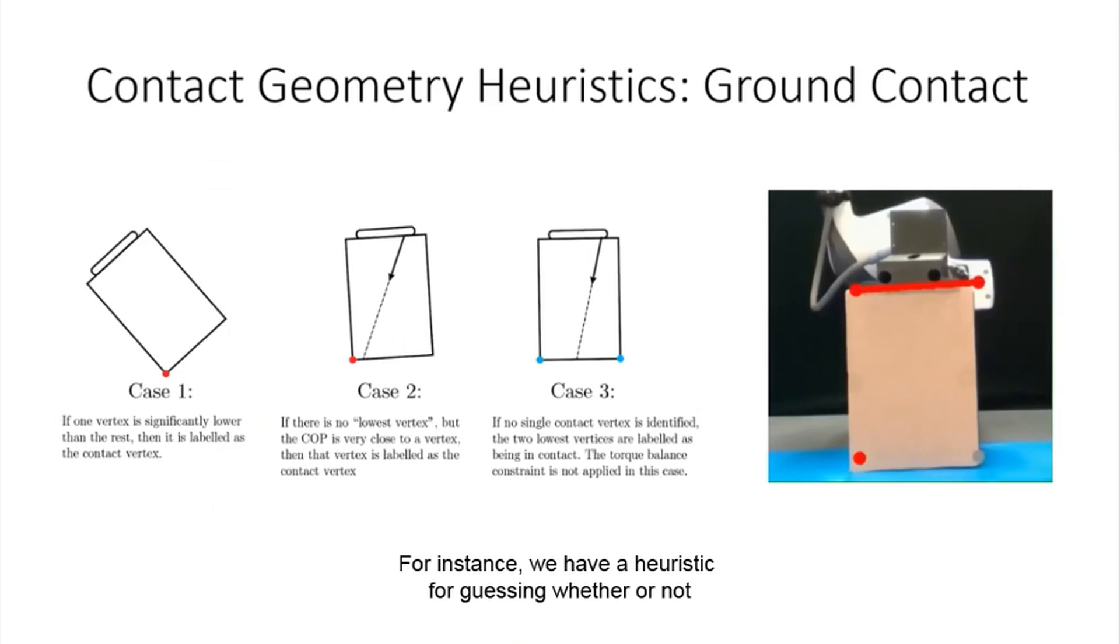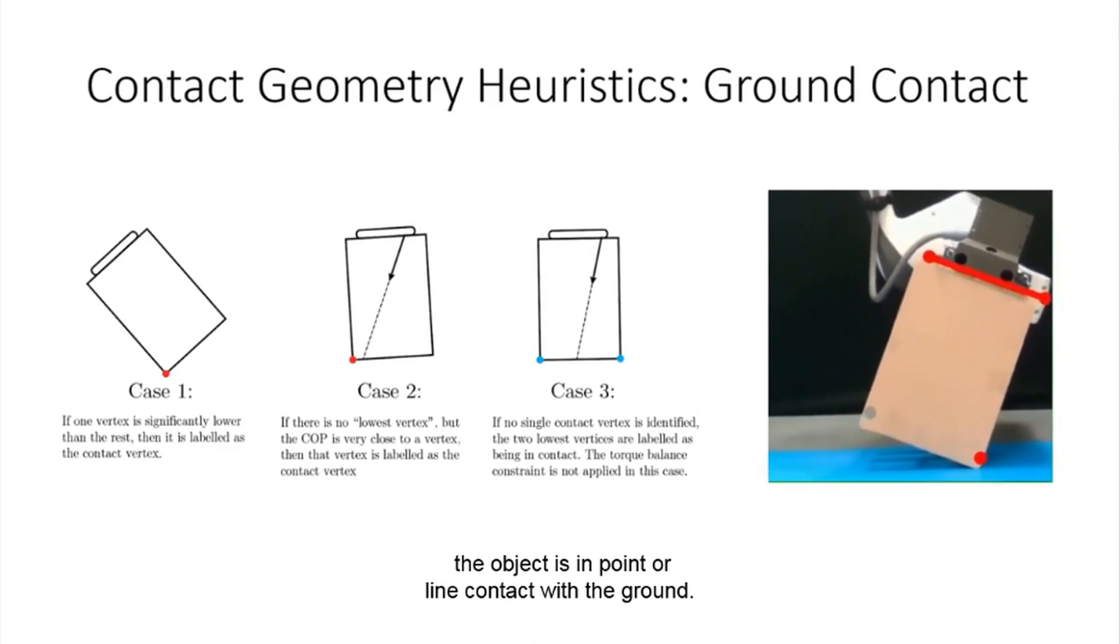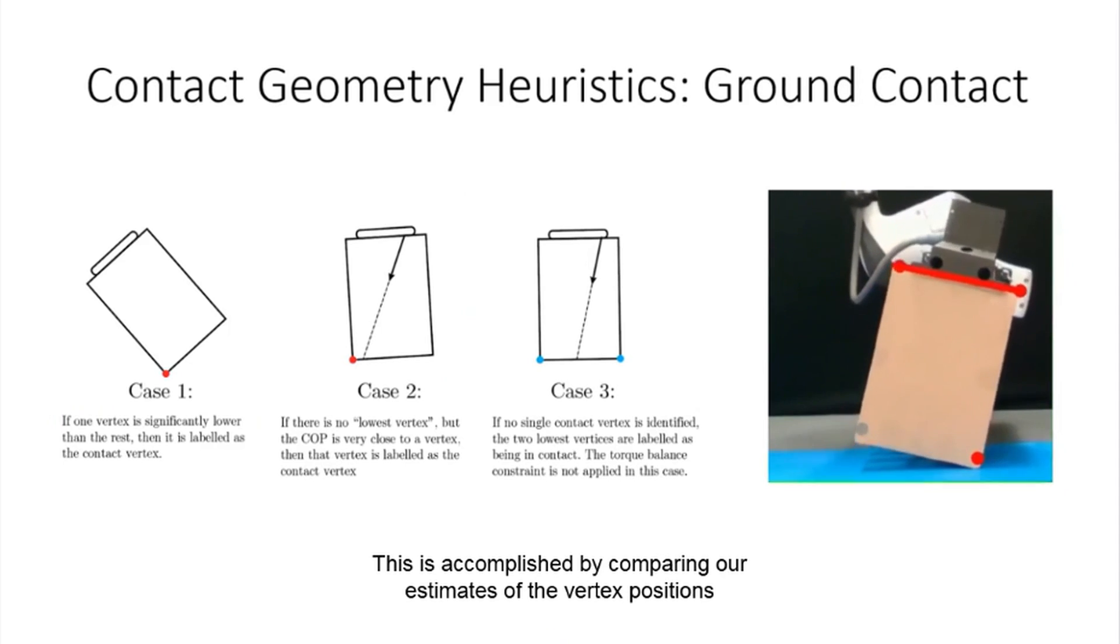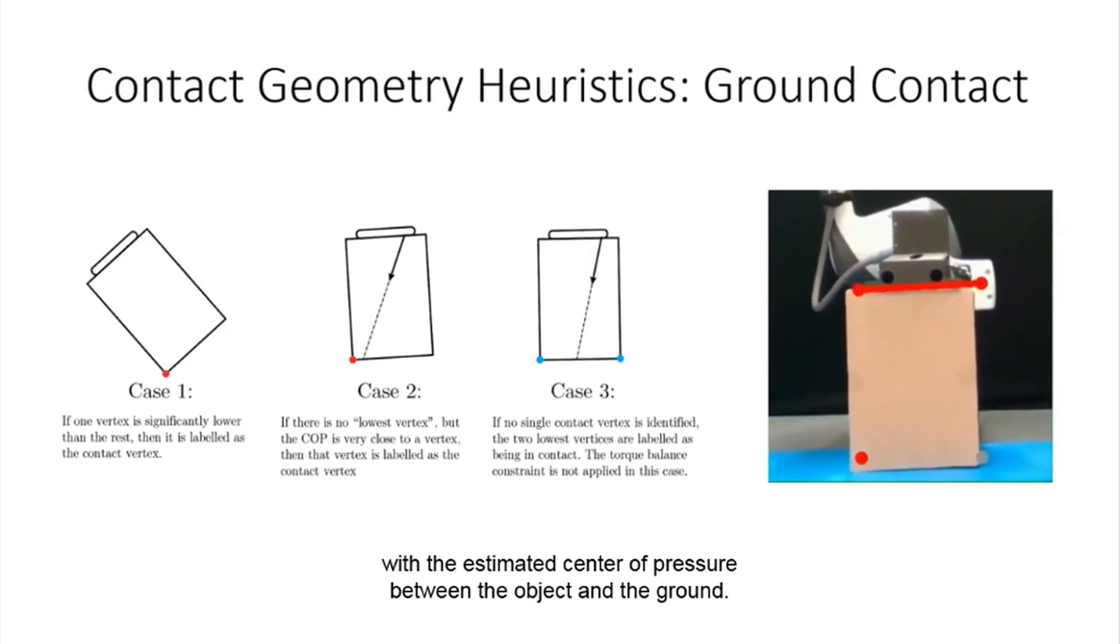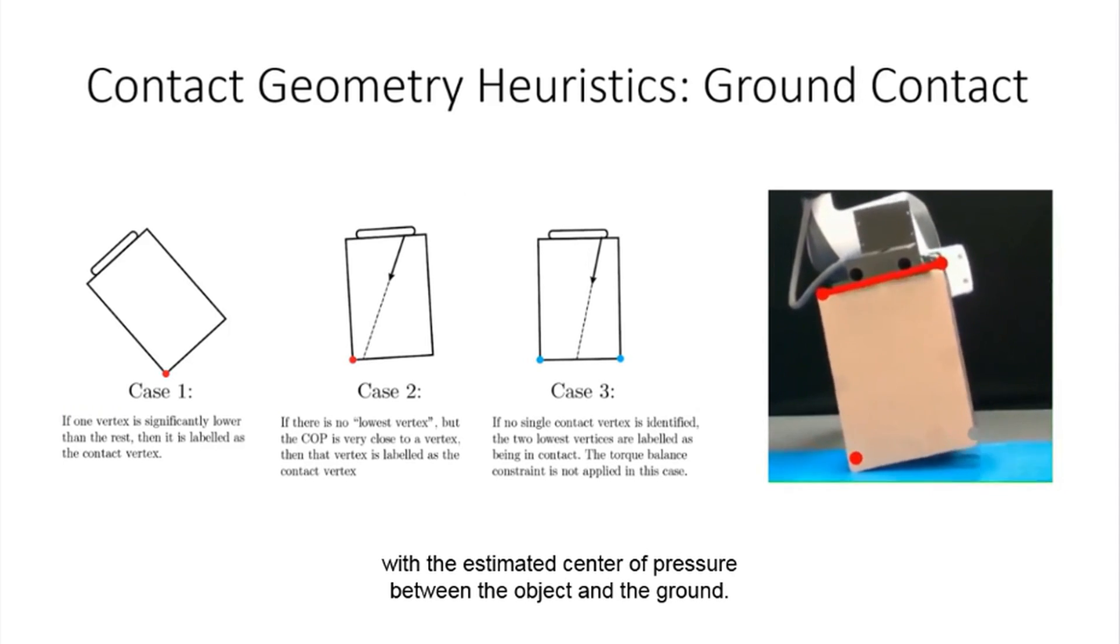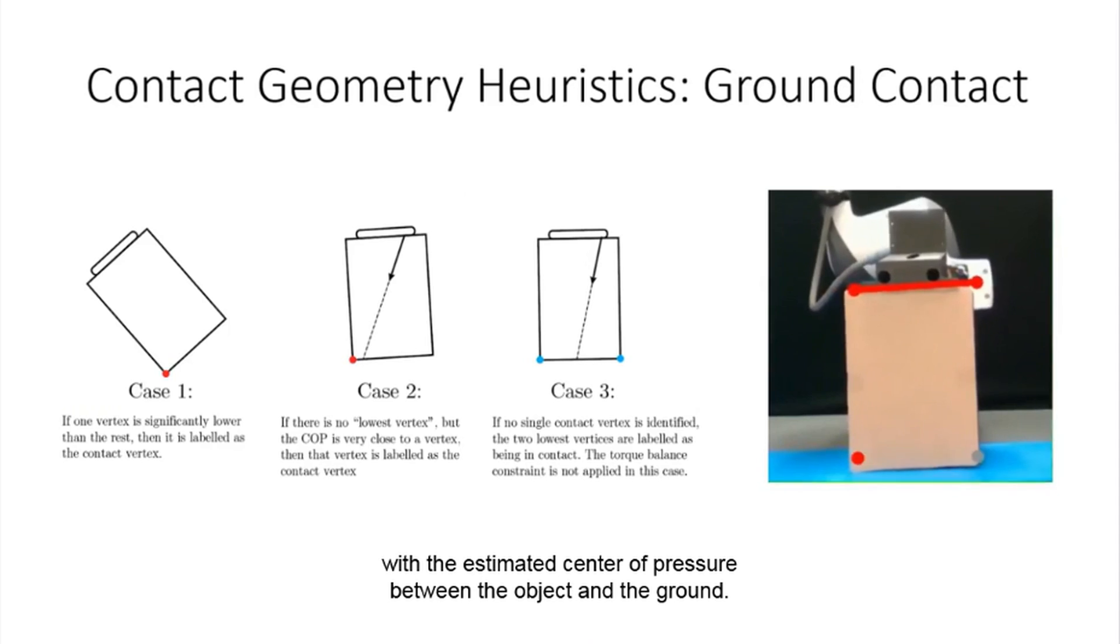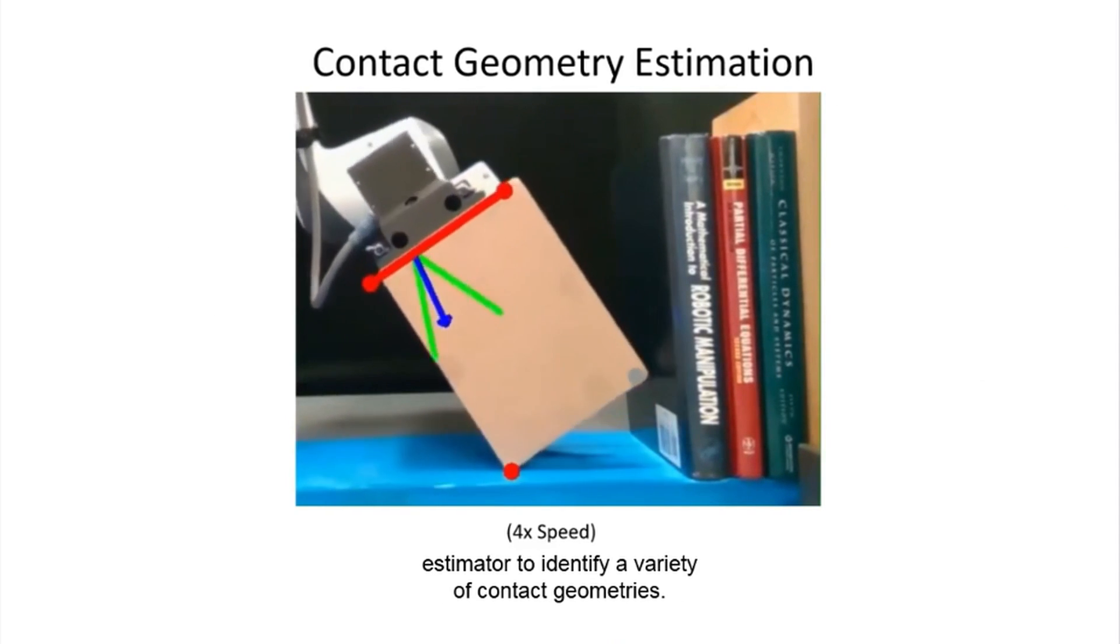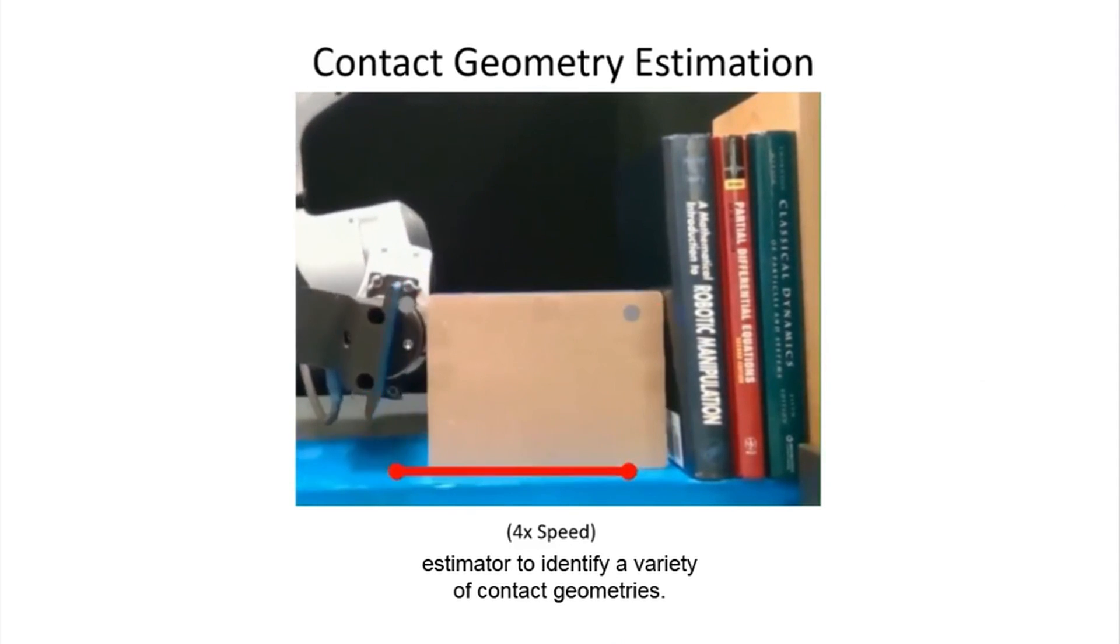For instance, we have a heuristic for guessing whether or not the object is in point or line contact with the ground. This is accomplished by comparing our estimates of the vertex positions with the estimated center of pressure between the object and the ground. Combining multiple heuristics allows our estimator to identify a variety of contact geometries.